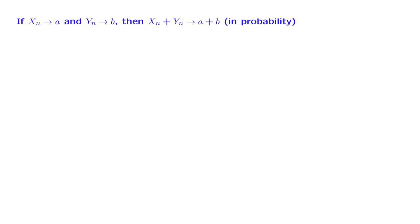This is a rather theoretical exercise that has two purposes. One is to verify that the notion of convergence in probability is quite natural and that it has properties similar to the notion of convergence of sequences. The second purpose is to get a little bit of practice with the formal definition of convergence in probability.